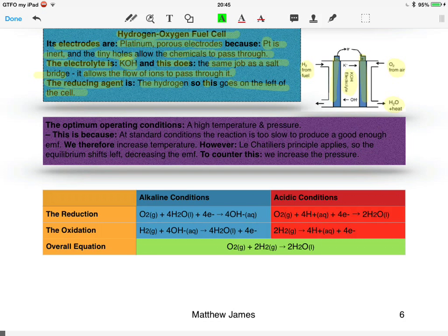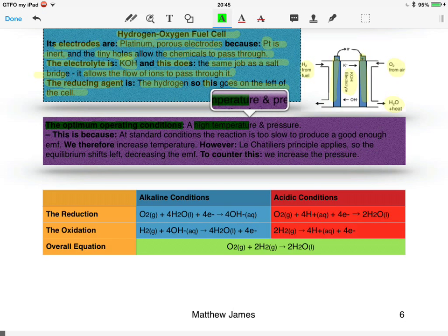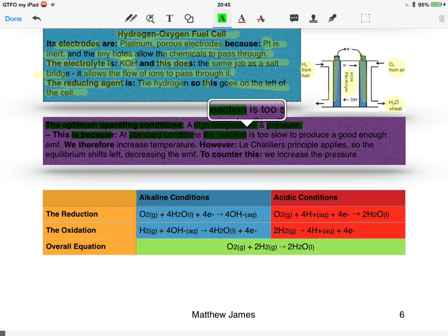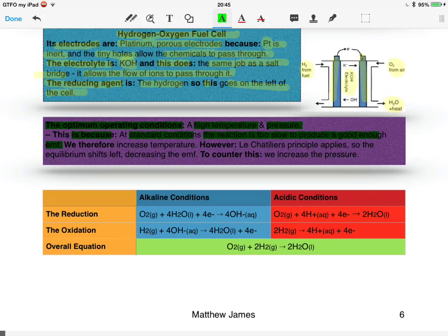Now what we need to know is about the conditions. The optimum operating condition for a fuel cell is a high temperature and a high pressure. The reason for this is because at standard conditions, the reaction is simply too slow to produce a good enough EMF, a good enough voltage, a good enough power.